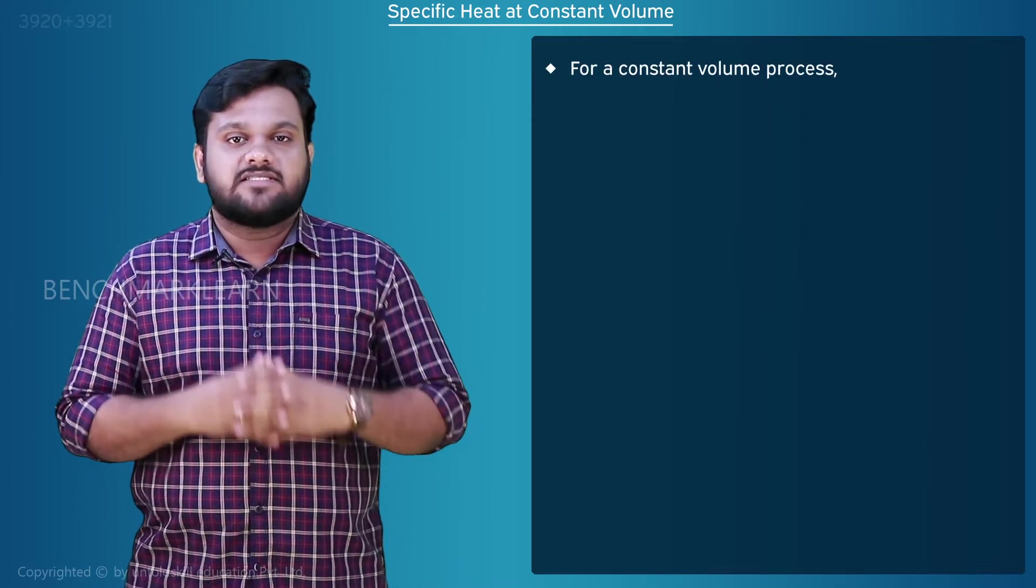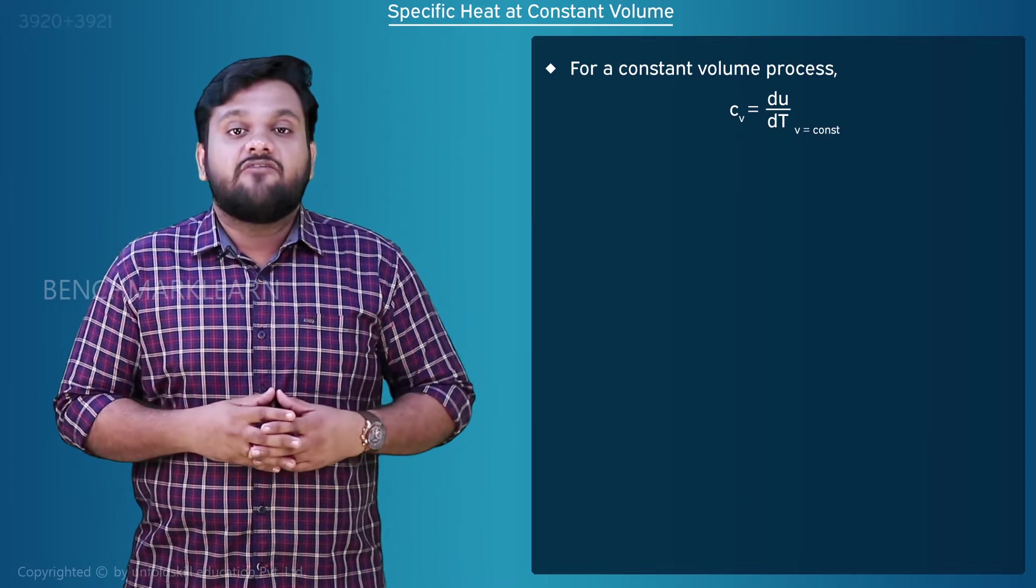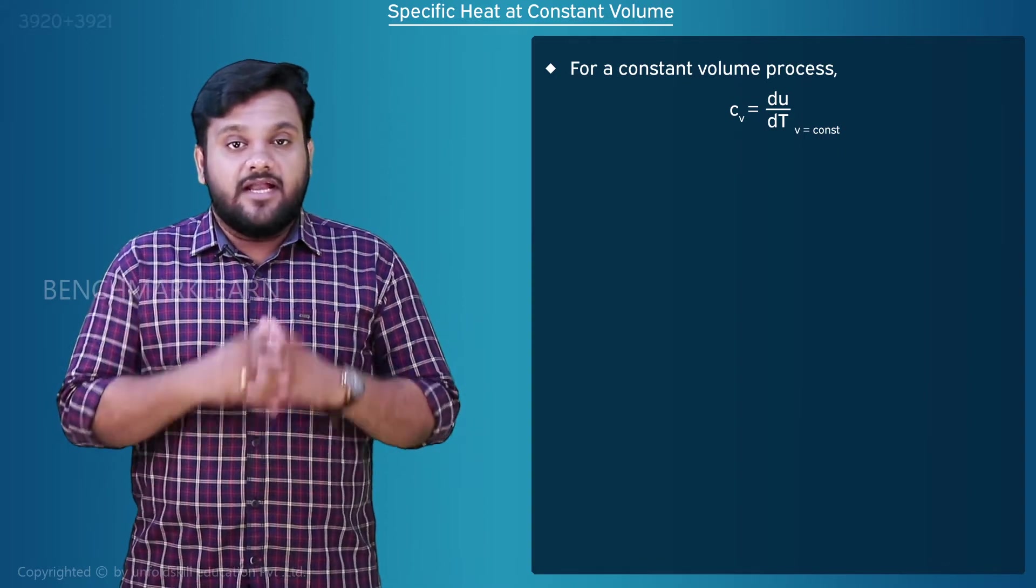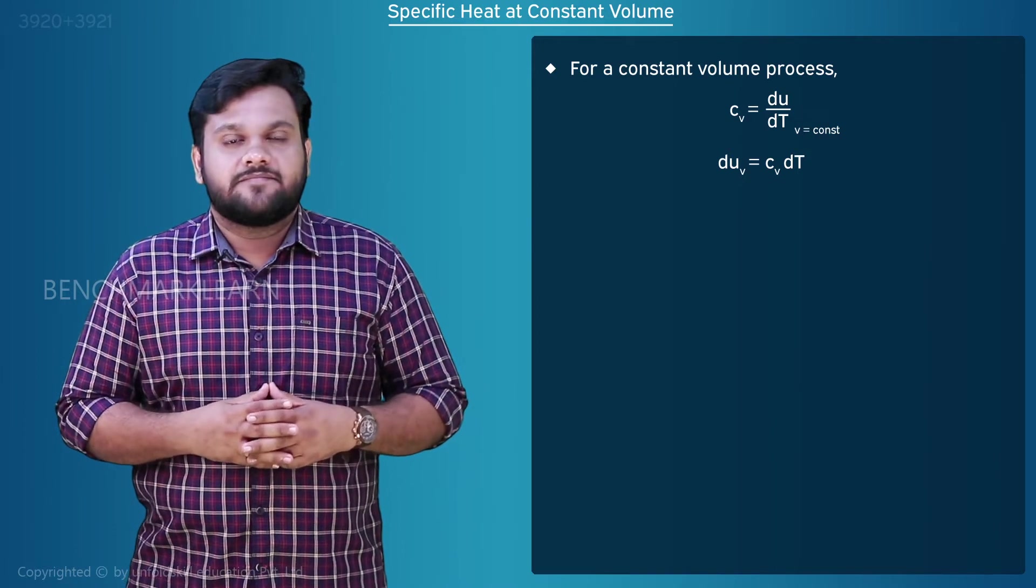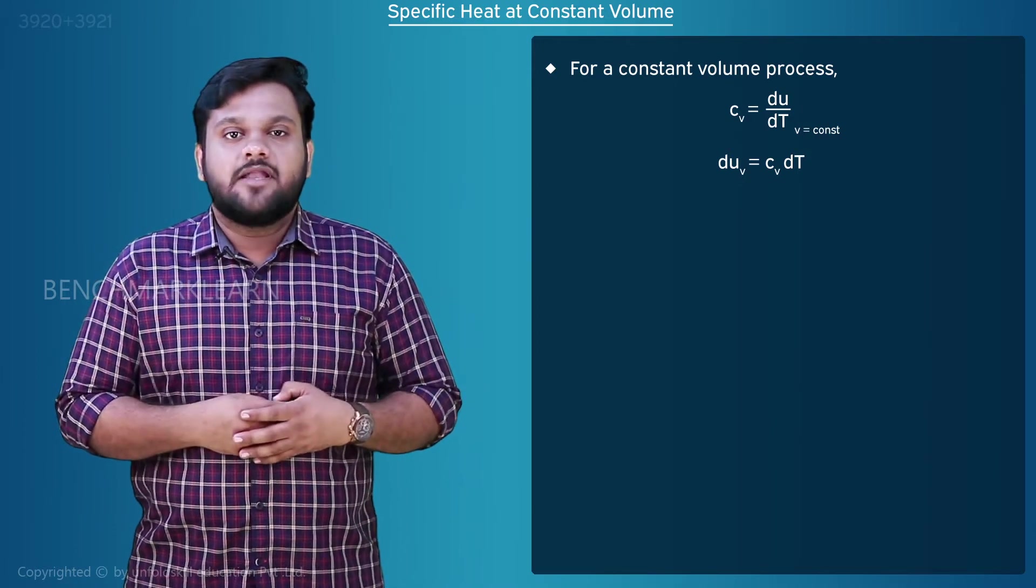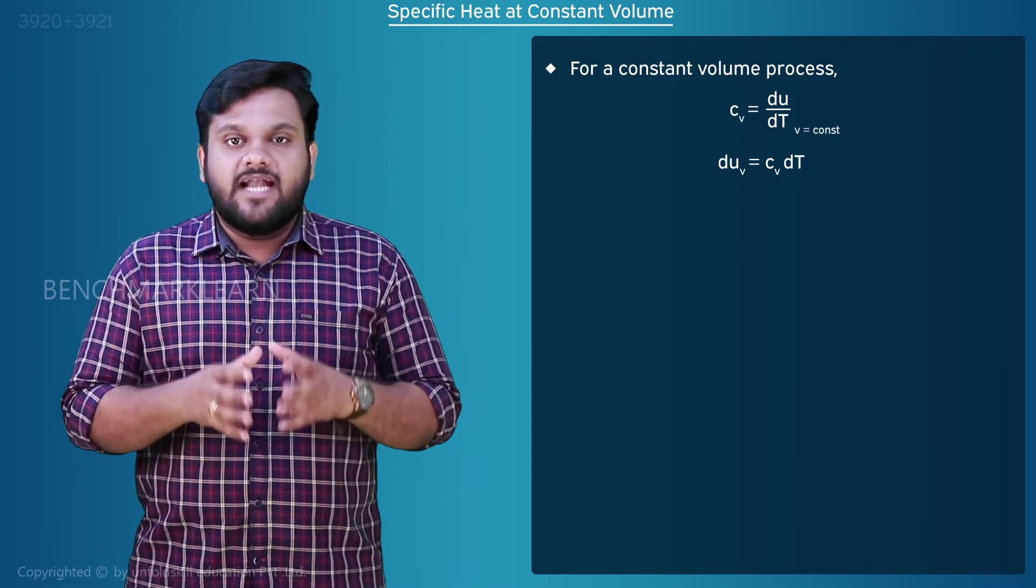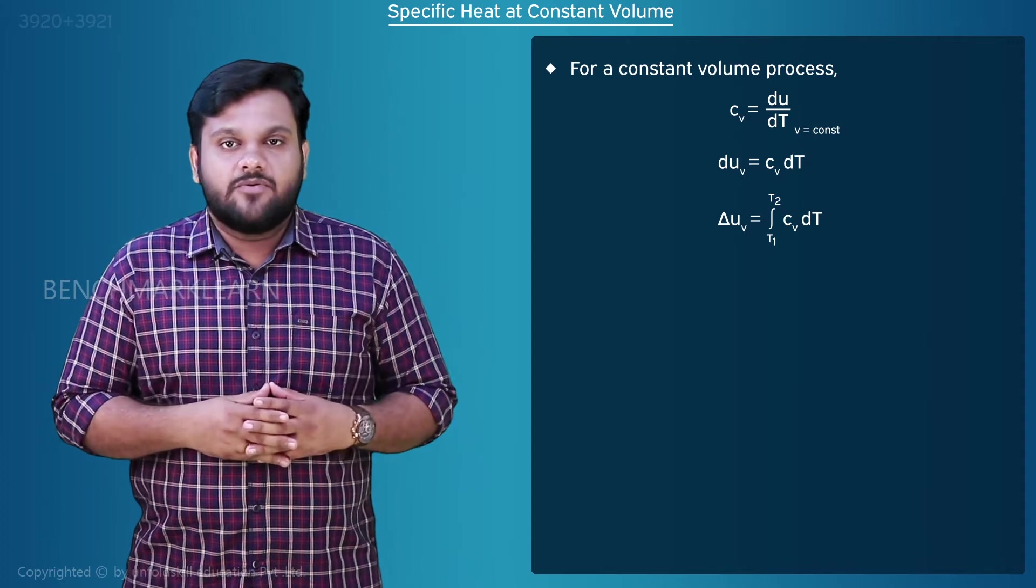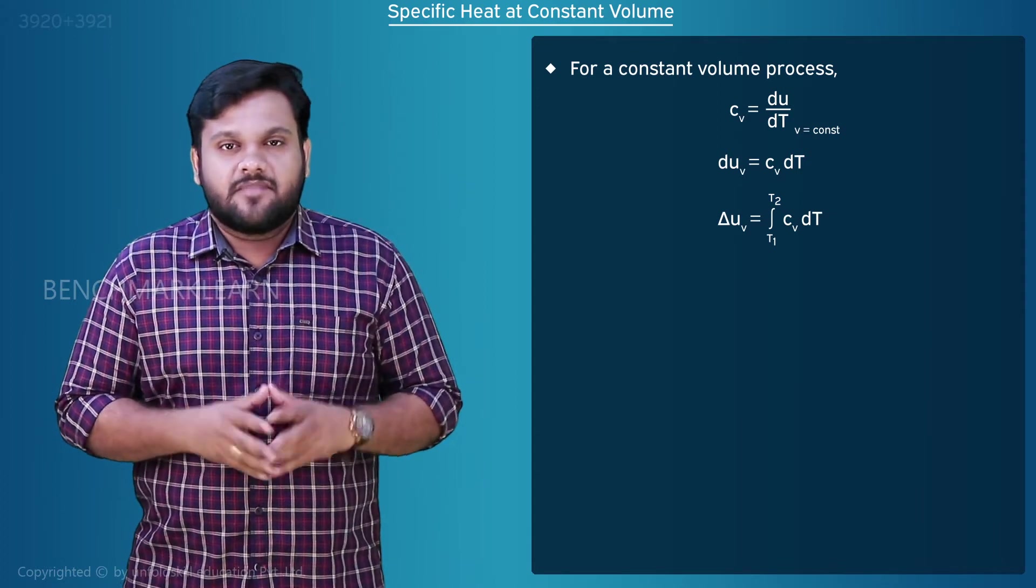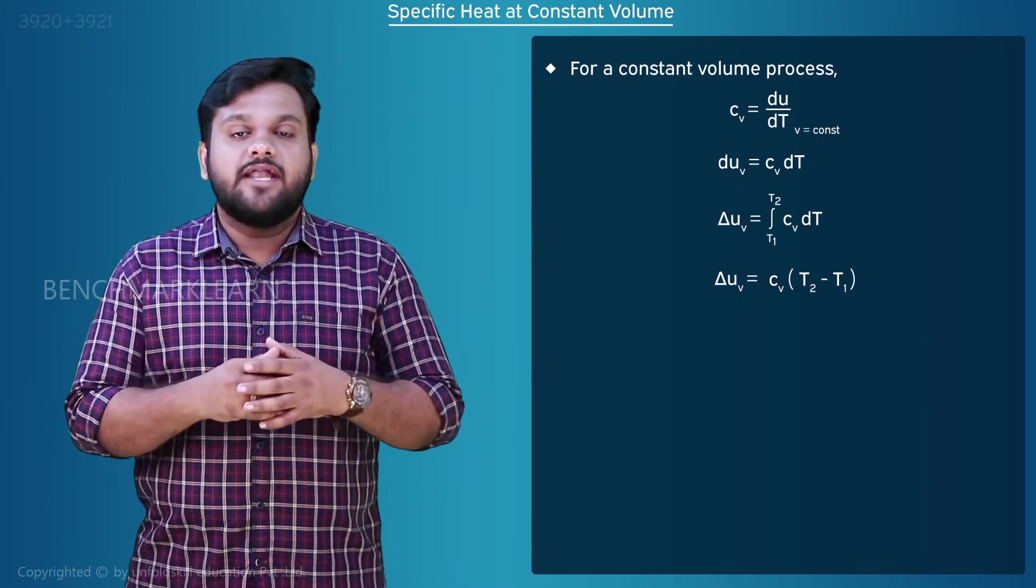For a constant volume process, Cv is equal to du by dt at V equal to constant. Du_V is equal to Cv into dt. Integrating the expression between the temperature limits T1 and T2, delta U_V is equal to integral T1 to T2 Cv dt, which equals Cv into T2 minus T1.